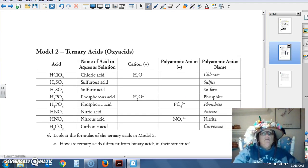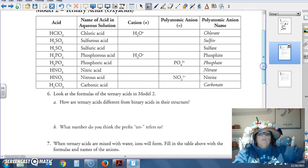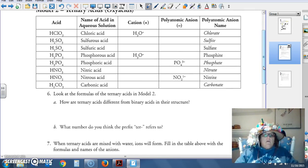The next type of acids, ternary acids or oxy acids. So let's take a look at all of these. How are these acids different from binary acids? What's different? They all have oxygens.